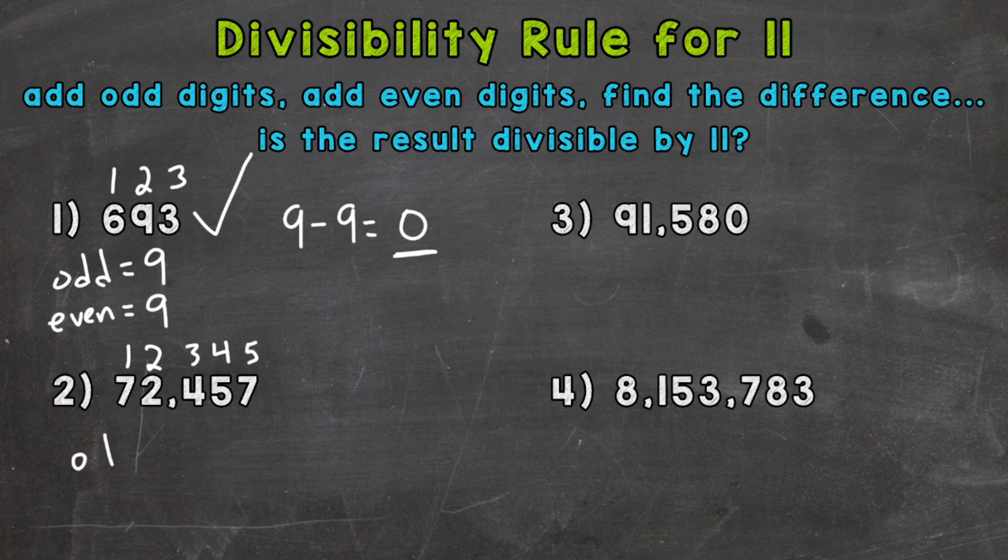So the odd digits, 7 plus 4 is 11, plus 7 is 18. The even digits, we have 2 plus 5 is 7. So let's find the difference here. We have 18 minus 7, which gives us 11.